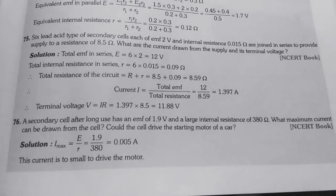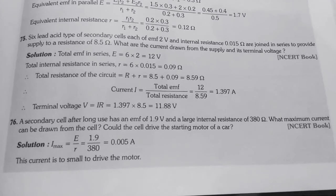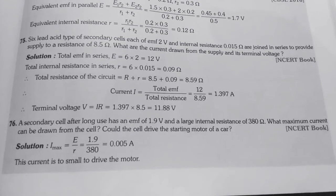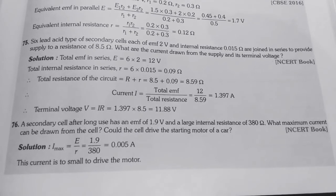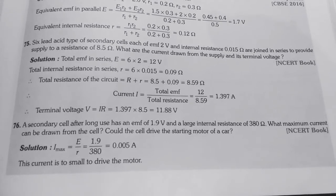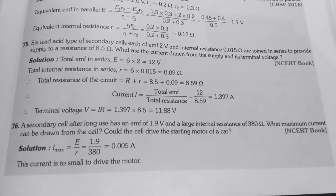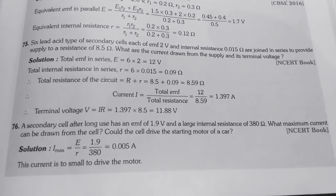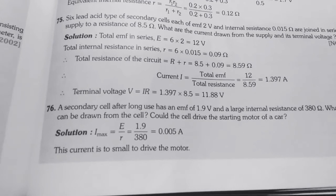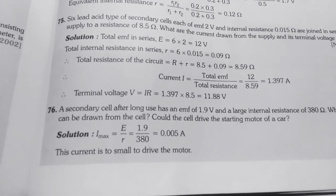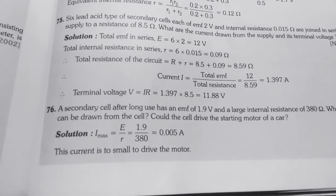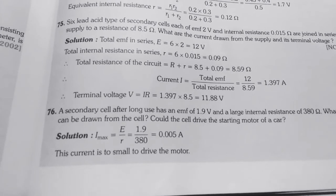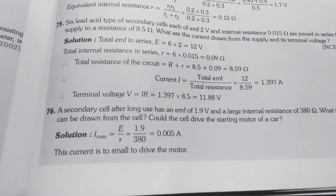Then, question number 76. Very small numerical is given. A secondary cell after long use has an EMF of 1.9 volt. That is its EMF has decreased. Initially it was more than 1.9 but because of long use now it is 1.9 volt. And a large internal resistance of 380 ohm. What maximum current can be drawn from the cell? Could the cell drive the starting motor of a car? So, hereby simply applying Ohm's law I equals to V upon R. In place of V we will put EMF E upon R. We get 1.9 upon 380 that is 0.005 ampere. And obviously this current is very very less. So, this current is too small to drive the motor.